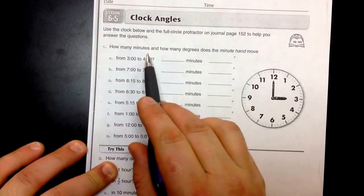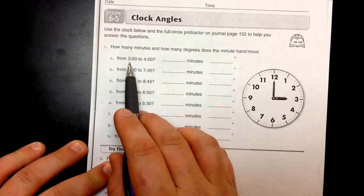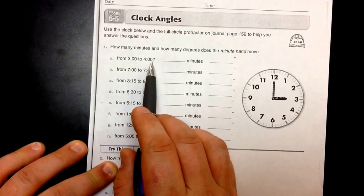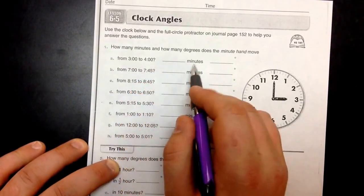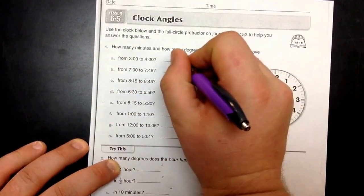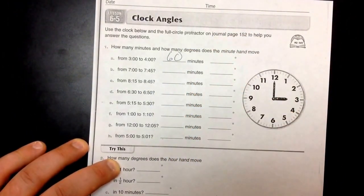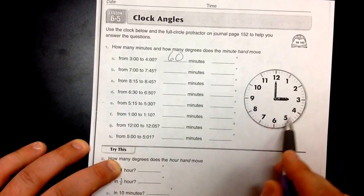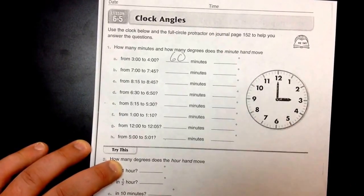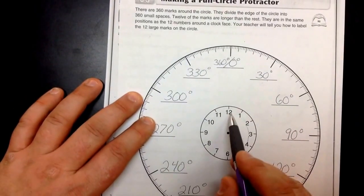How many minutes and how many degrees does the minute hand move? So from three o'clock to four o'clock, how many minutes is that? That's one hour of time. We know that one hour is 60 minutes. How many degrees would it take to move 60 minutes? Remember 60 minutes uses all the way around.